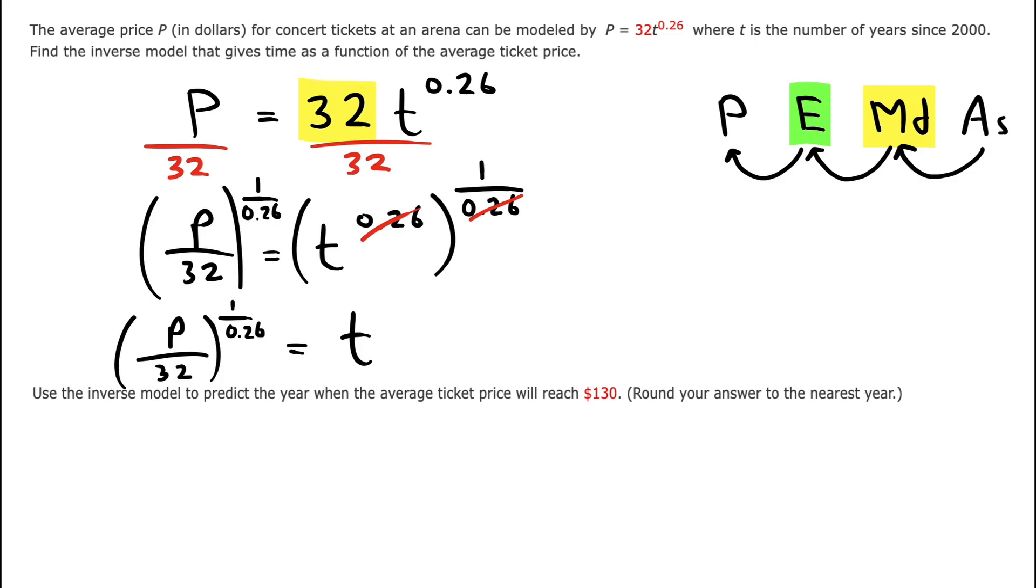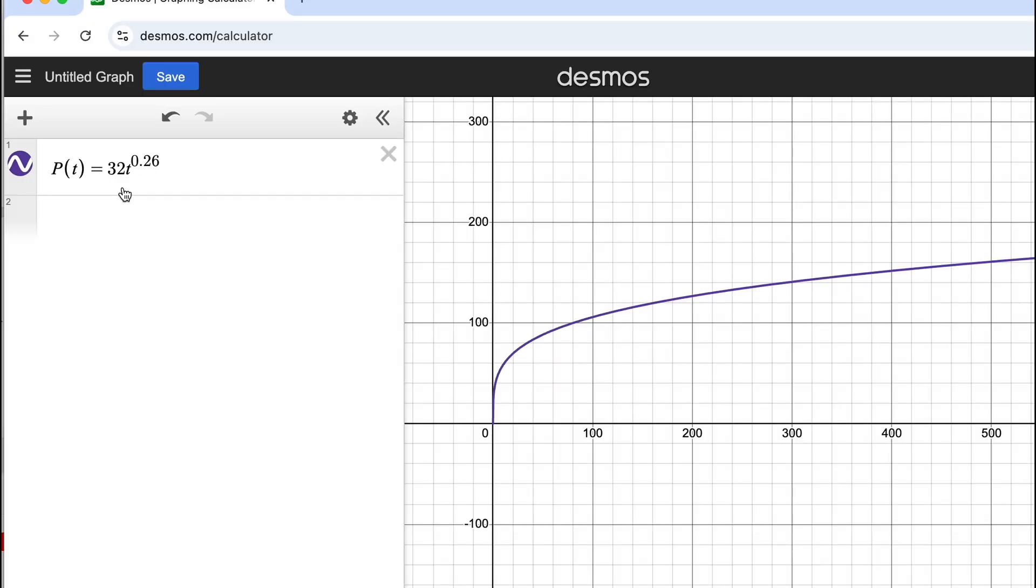We can check that this truly is the inverse function by making a graph of it and comparing to the original. So here's a graph of the original function, price as a function of time. Now I want to type in the inverse function, which was t equals p over 32 raised to a power of 1 over 0.26.